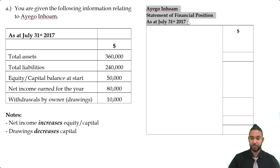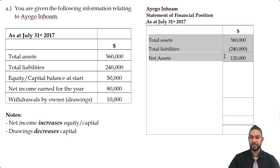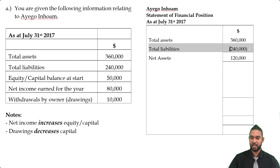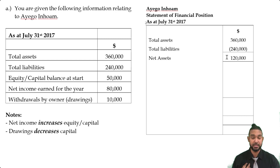Don't forget to head up your balance sheet or any statement properly: the name of the entity, the name of the statement, and the period to which it applies. I'm going to put assets minus liabilities on top and we're going to get a value for net assets. Total assets is 360 minus total liabilities of 240, giving you net assets of 120. Brackets are optional — they do clutter up the visual space, but if you don't like them, don't use them.